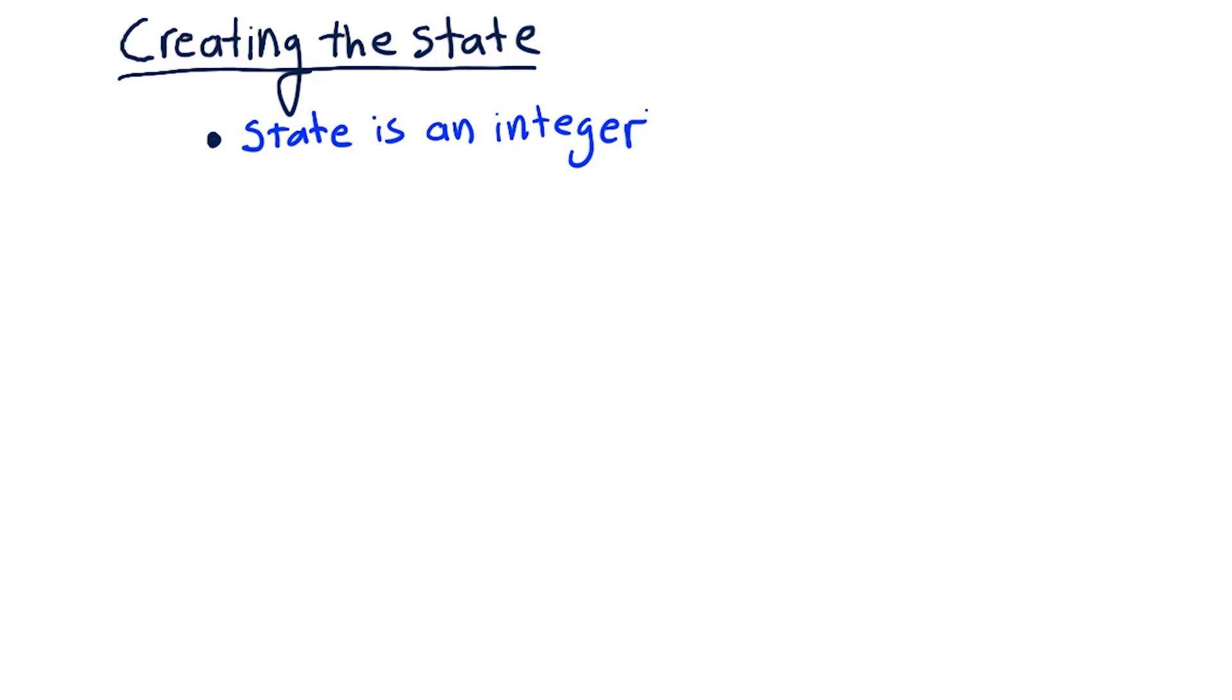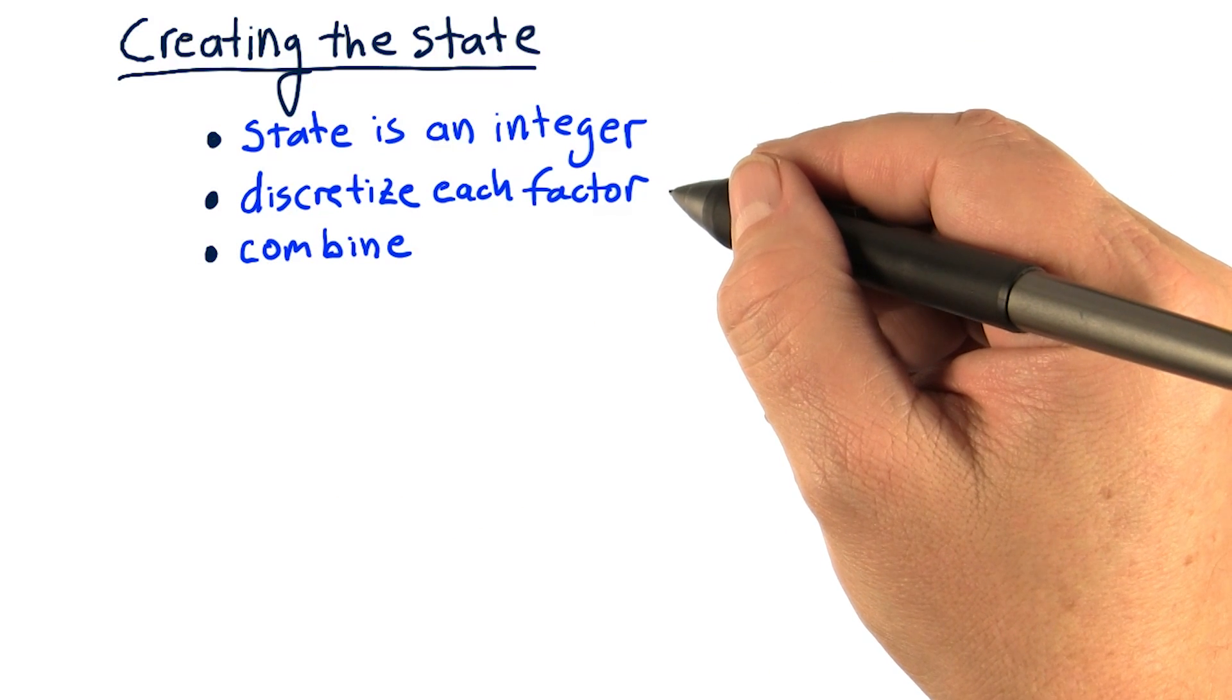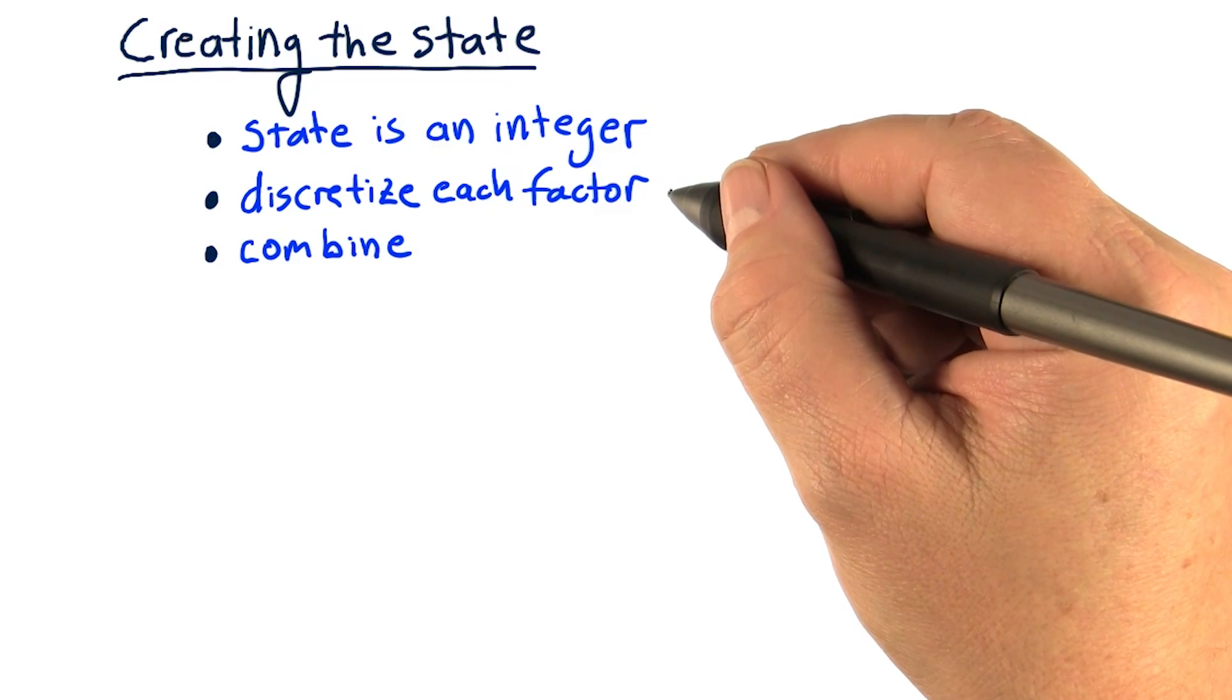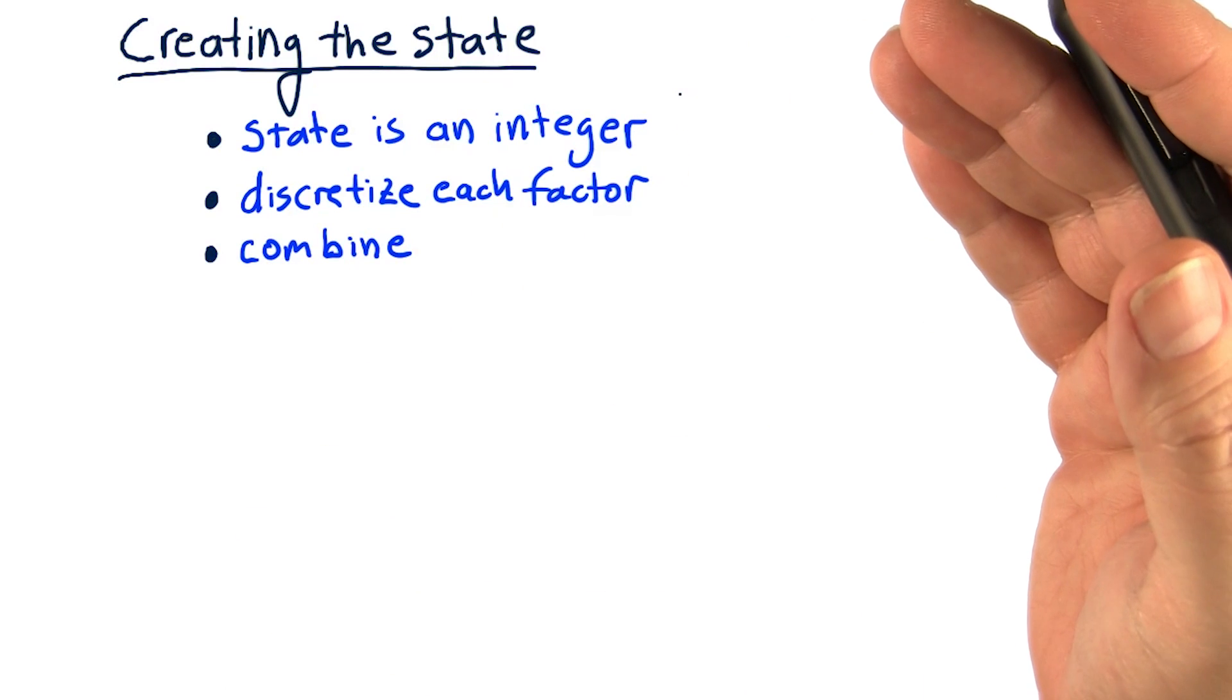Now, we have to do a little bit of work to get our state to an integer. Here is the general way to do it. Our first step is to discretize each factor. It's a weird word, I'll explain it in a moment, but it essentially means convert that real number into an integer.